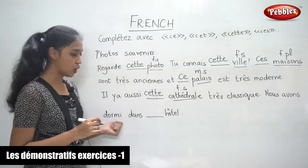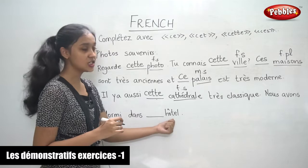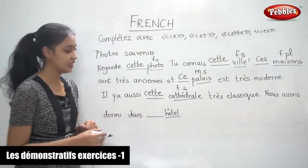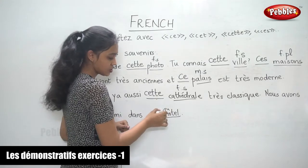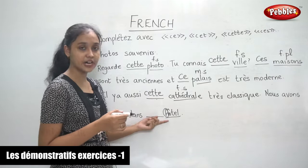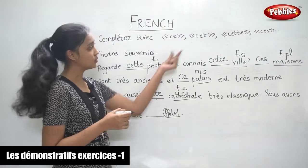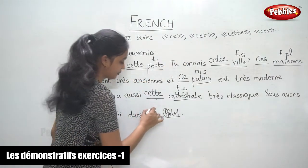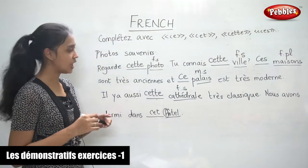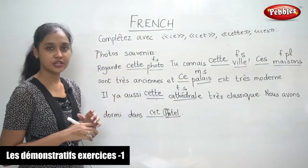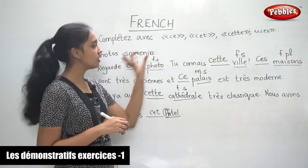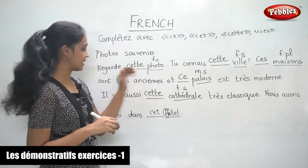Nous avons dormi dans dash hôtel. Now the noun is hôtel. We know that when the noun begins with a vowel or an h, we use cet. Cet hôtel. So this is how we fill in the demonstrative — very simple. Just look at the noun and determine which demonstrative fits.